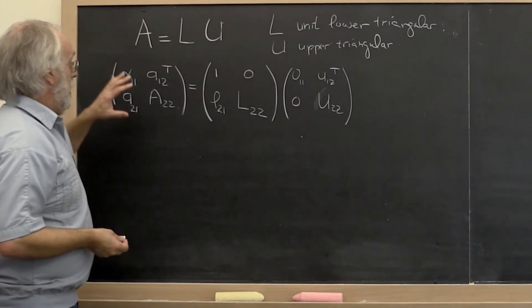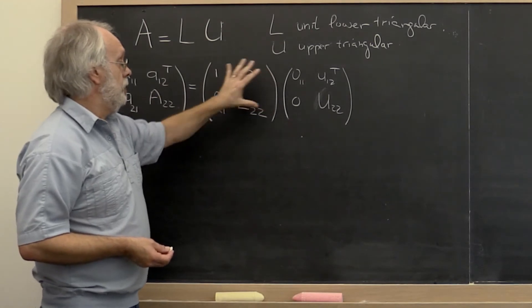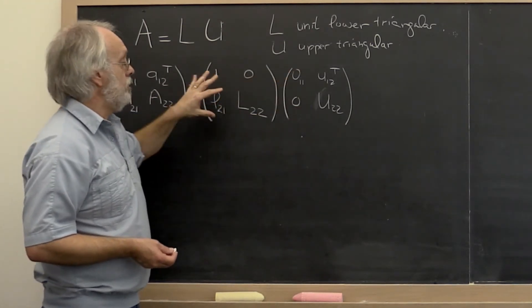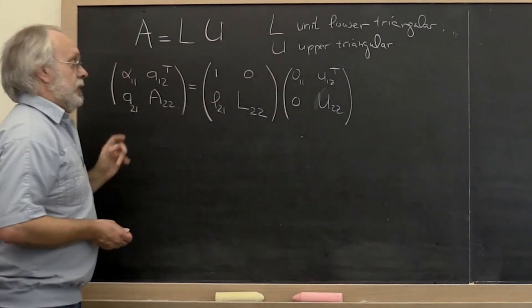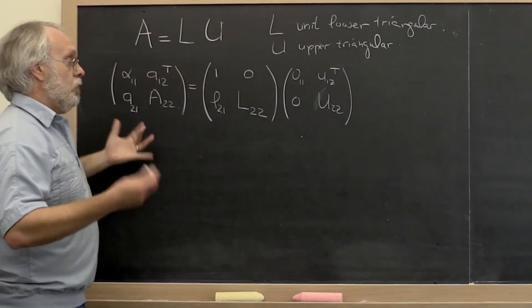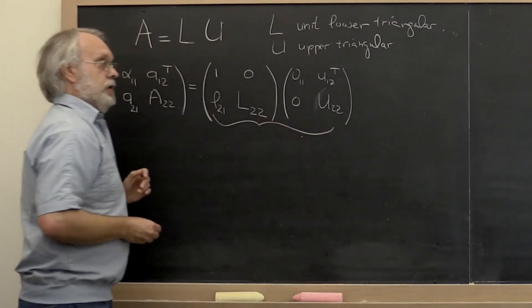Now we know what the elements of A are. We would like to compute the elements of L and U. So we need to somehow relate the values in L and U to the entries in A. And the way we're going to do that is by multiplying this product out.